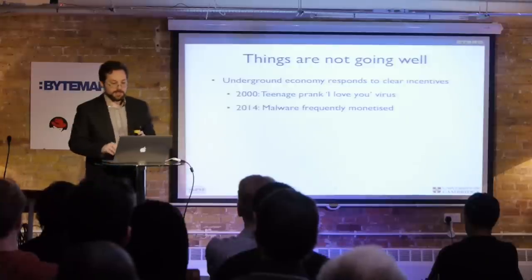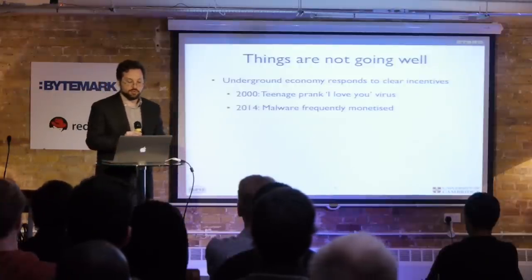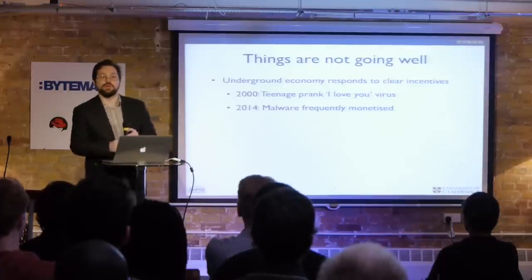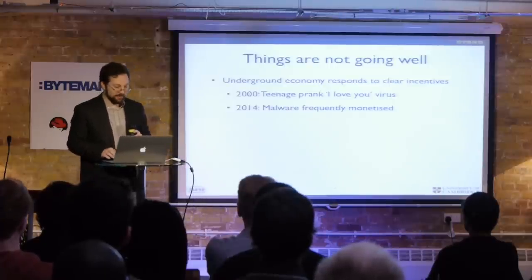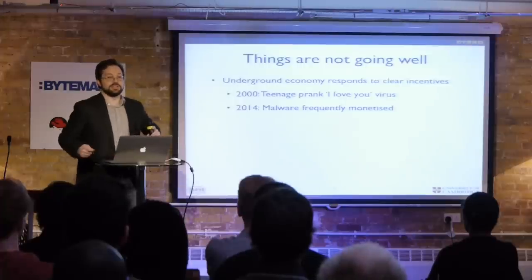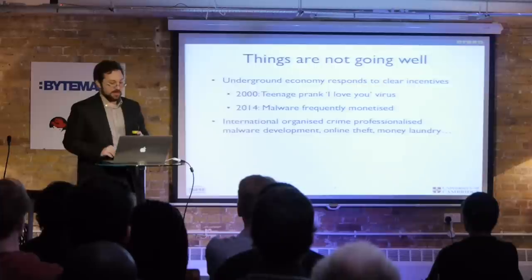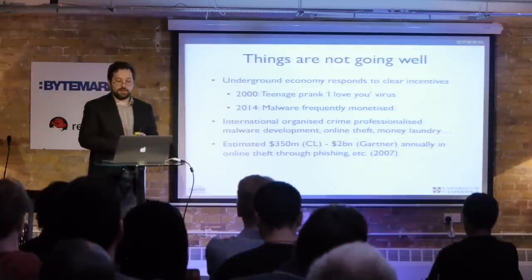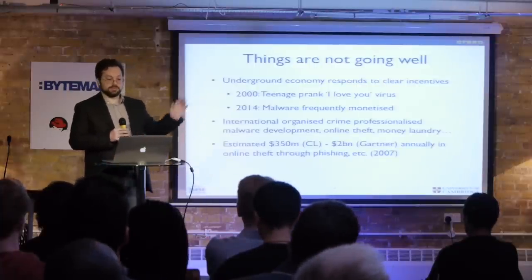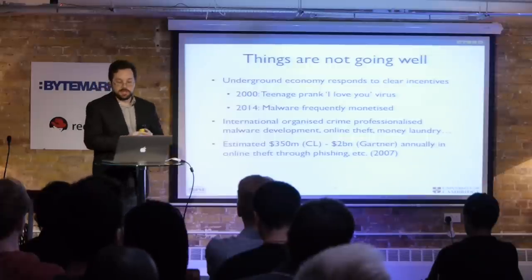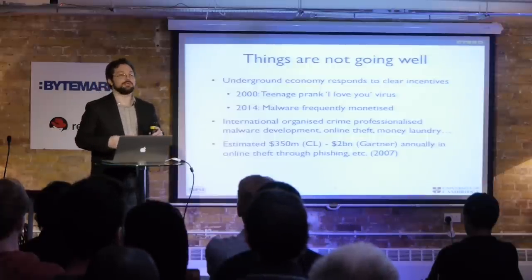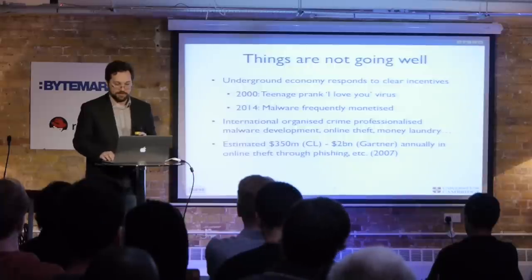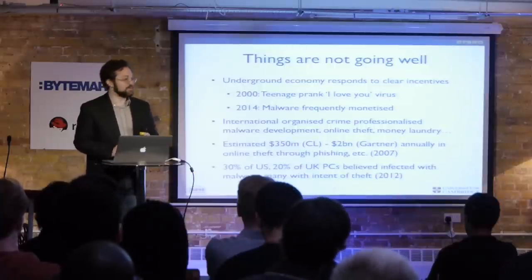Things are not going well. In 2000, it was considered a cool prank if the entire internet was covered in a worm telling everyone someone loved their girlfriend. Today, the entire internet is covered with more serious things. Organized crime got involved, which made things exciting. Gartner throws around billions of dollars in estimates; we ran our own numbers at the Cambridge Computer Laboratory and came up with something almost an order of magnitude lower, yet it was still a surprisingly big number. And of course, there is malware everywhere.